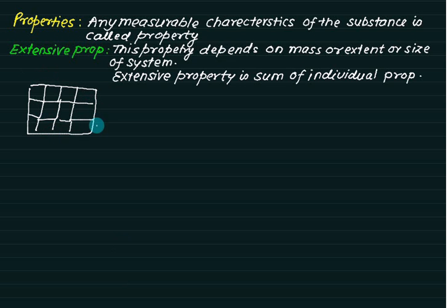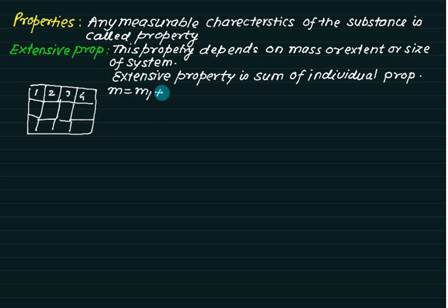Consider this complete system divided into a number of parts: 1, 2, 3, 4, and so on. If you want to find out the total mass of the system, then the total mass equals m1 plus m2 plus m3, and so on. So if we add all masses of the individual parts, we get the mass of the total system.